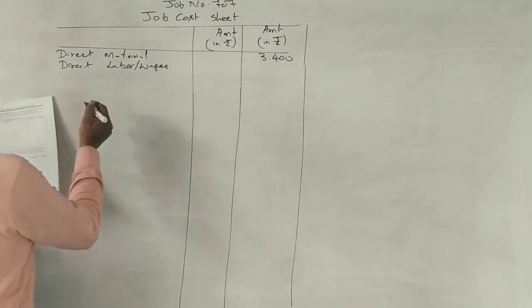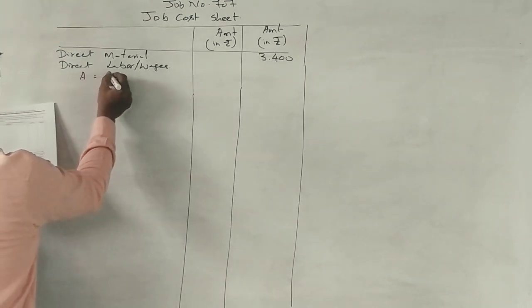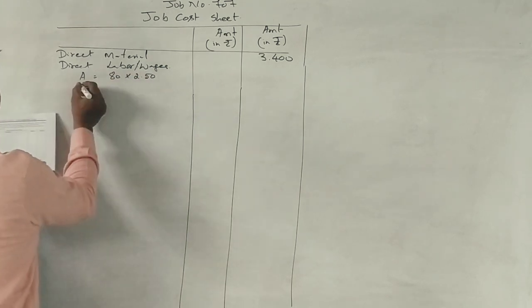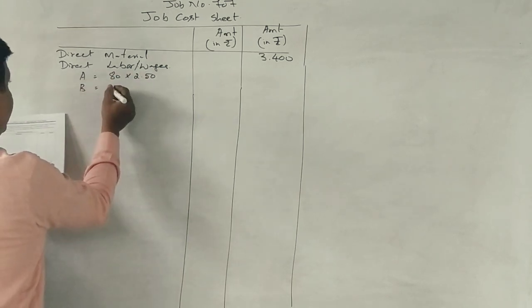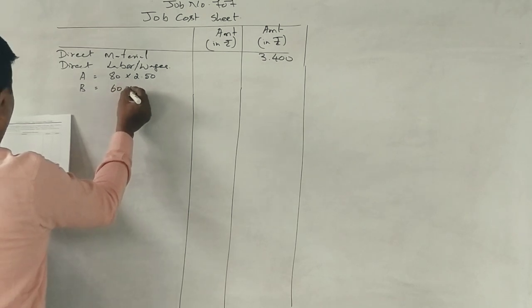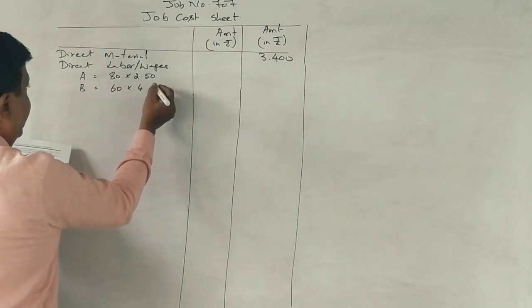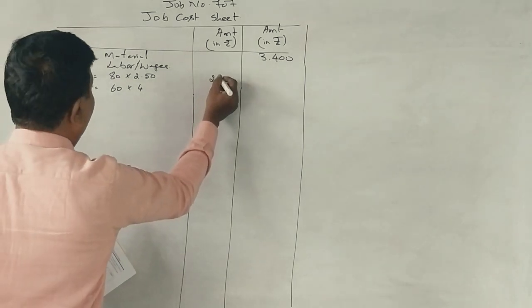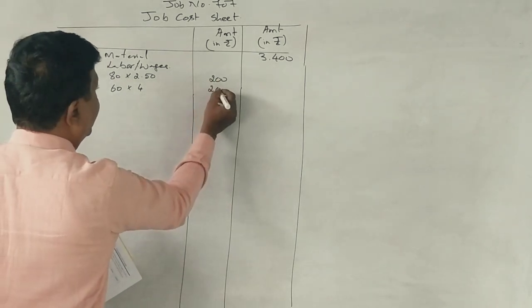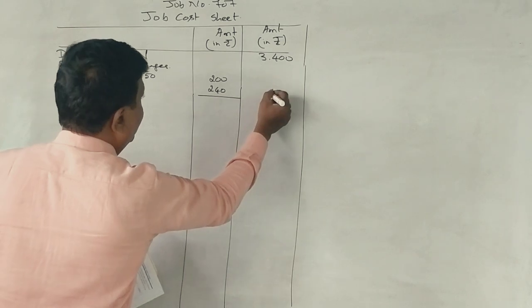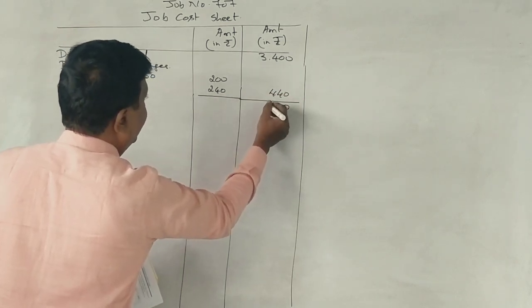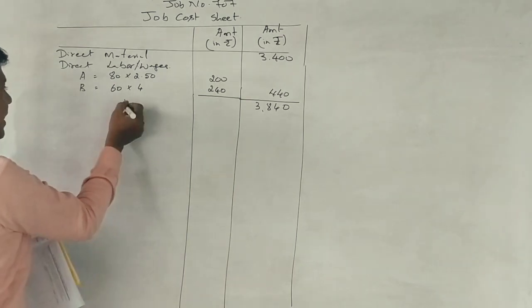Labor: Department A, 80 hours at Rs. 2.50 per hour. Department B, 60 hours at Rs. 4 per hour. Total Rs. 440.